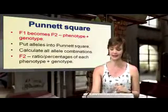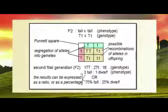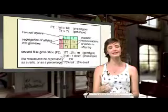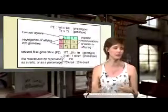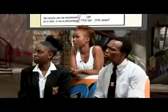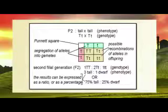Our P2 are tall × tall plants, but heterozygous: Tt × Tt. We separate the alleles and see different combinations in the offspring: TT, Tt, Tt, and tt. In our F2 generation we have different kinds of offspring — some tall homozygous (TT), some tall heterozygous (Tt), and some short homozygous (tt). The ratio is 1:2:1, or three tall to one dwarf, which is 75% tall to 25% dwarf.